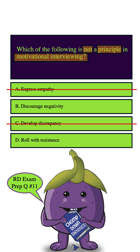How about D. Roll with resistance. Roll with resistance is an important principle in motivational interviewing — it's all about understanding and accepting a person's concerns and hesitations without arguing or pushing them too hard. The aim is to keep things collaborative and non-confrontational. So roll with resistance is definitely a principle in motivational interviewing, and we can eliminate it, leaving us with B. Discourage negativity — that is not a principle in motivational interviewing, making it the correct answer.